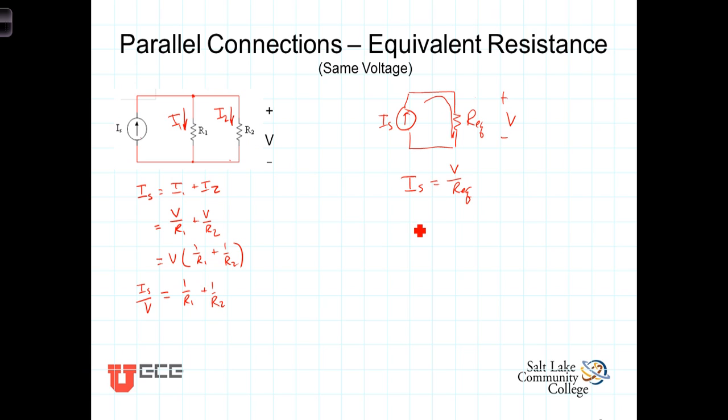Again, forming that ratio I sub s over V, we have I sub s over V is equal to 1 over R eq.